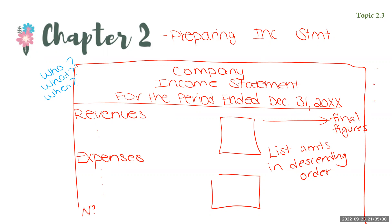We're going to work through and actually see how to prepare a statement using some data that I will post for you. We'll calculate net income — net income gets a dollar sign and a double underline when we're done solving for it. Go ahead and download the document posted for Kinney Company, and we will prepare an income statement for them in the next video.